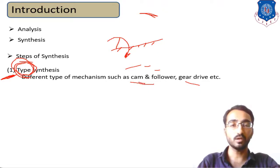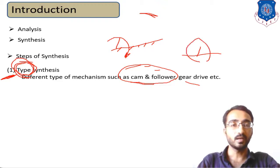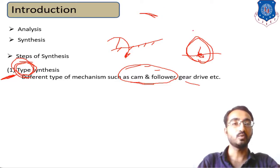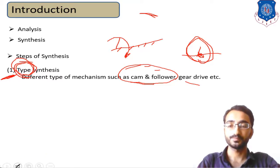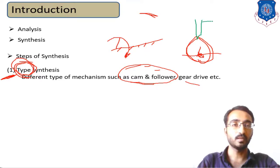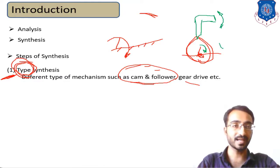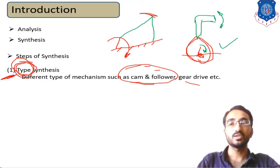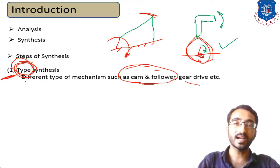For example, you can use a cam-and-follower system where the cam provides rotary input motion and the eccentric cam helps achieve reciprocating motion. With a follower arranged appropriately, when you rotate the cam it produces oscillatory motion of the follower. Alternatively, you can use a four-bar chain mechanism where you give input to the crank and receive oscillation of the lever. This is how type synthesis works.